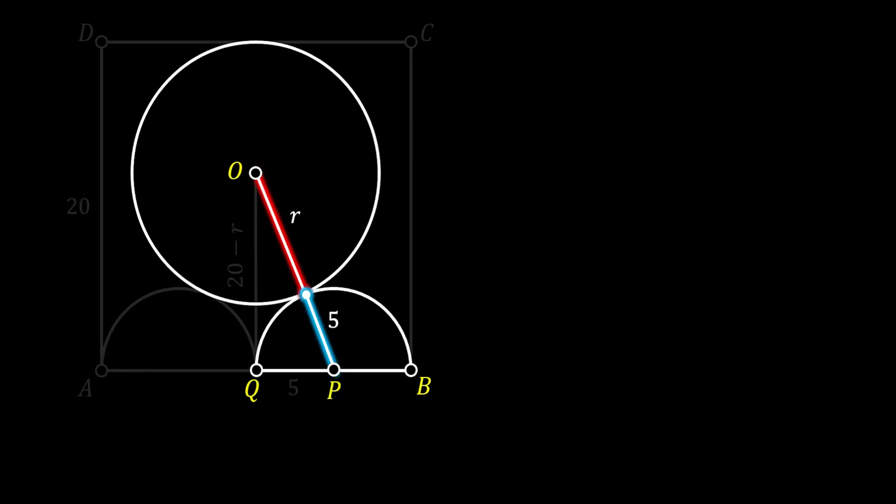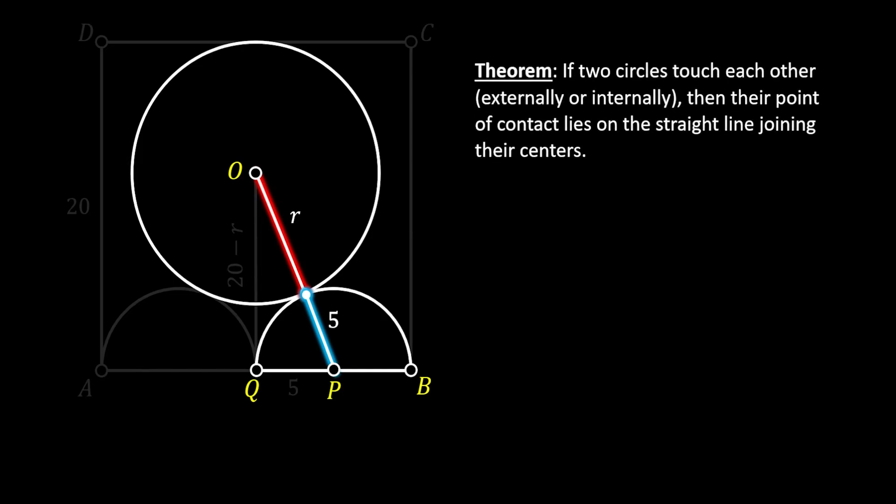We know that this is a straight line by using one interesting theorem of a circle, which states that if two circles touch each other externally or internally, then their point of contact lies on a straight line joining their centers. As you can see, this is exactly our case, since the line OP connects two centers of our circles and passes through their point of contact.